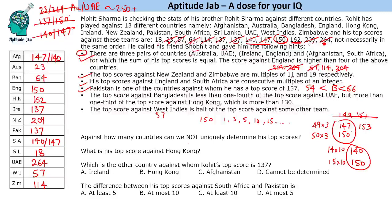Now answering the questions. Against how many countries can we not uniquely determine his top score? The answer is two — South Africa and Afghanistan. What is the top score against Hong Kong? That is 162. Which other country has a top score of 137? Ireland — Pakistan was already given in the statements. The difference between South Africa and Pakistan: Pakistan is 137, South Africa is 140 or 147, so the difference is either 3 or 10. That means the answer is at most 10 — 'at least 10' is wrong since it can be 3, and 'at most 5' is wrong since it can be 10.